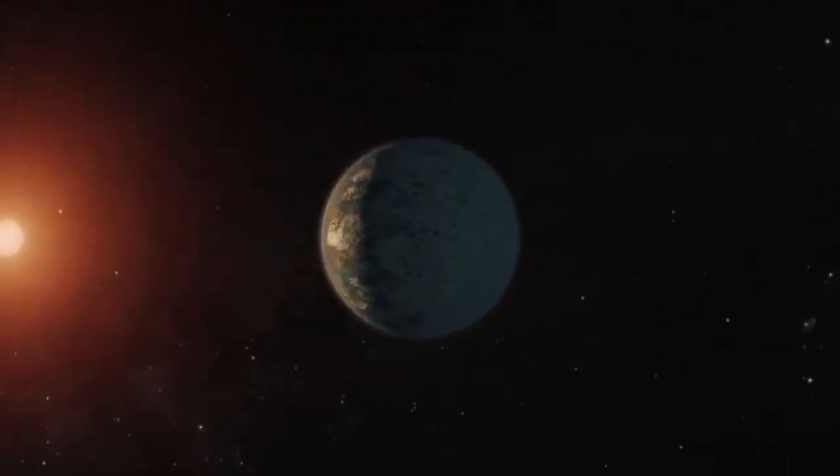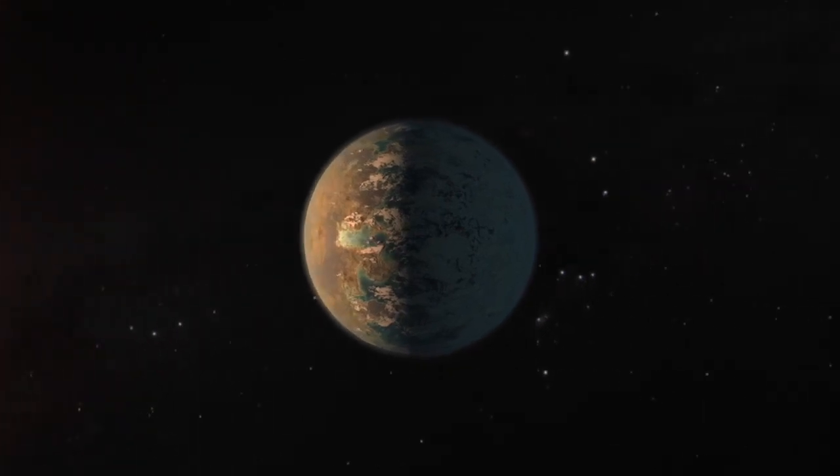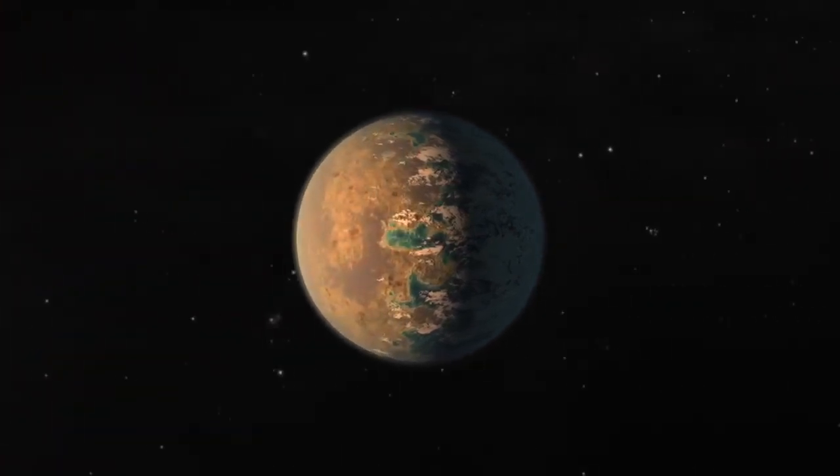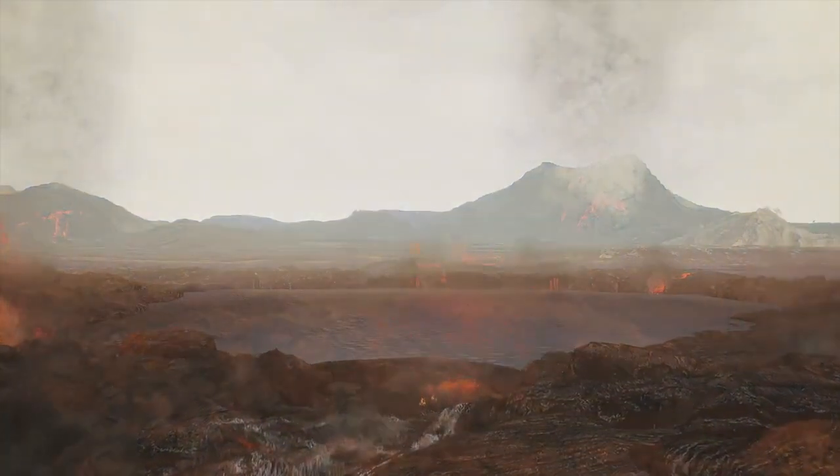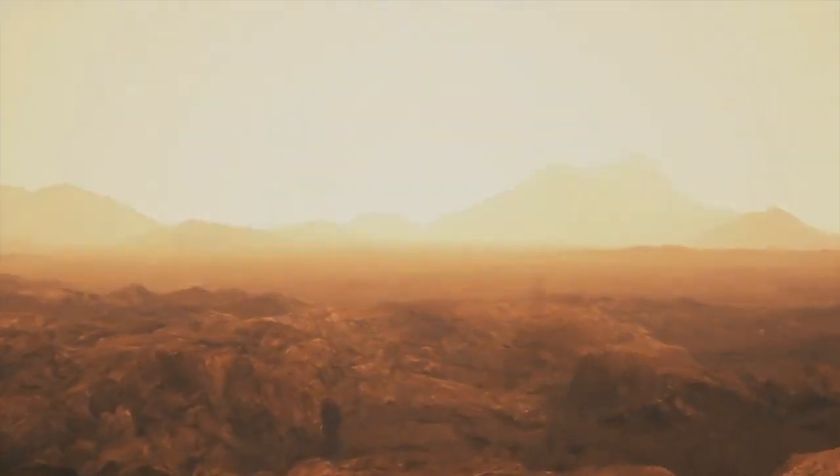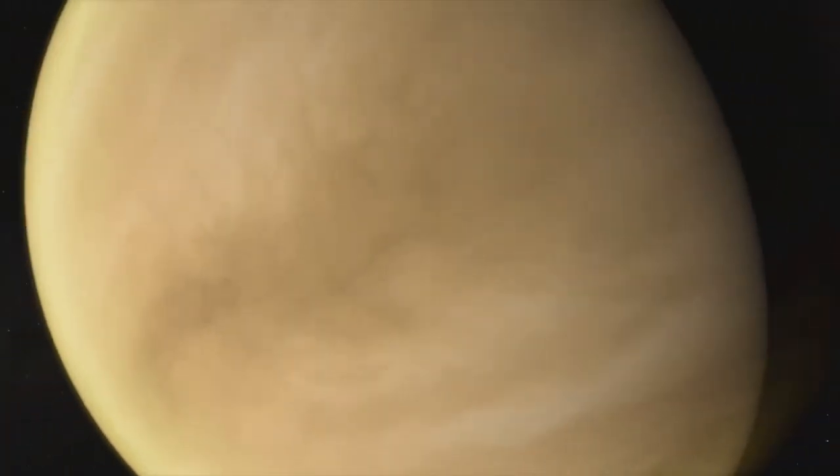The first planet in this zone is TRAPPIST-1d. It's on the very inner edge, so it could have liquid water on its surface, or it may have suffered a runaway greenhouse effect, like Venus.